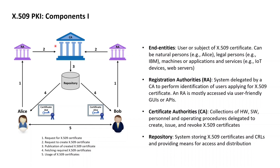Once the CA has created the certificate, the CA stores it into a public repository, which are systems to store X509 certificates together with certificate revocation lists, or CRLs. The repository must provide means for accessing and distributing the stored certificates and CRLs, and we will get to know the real purpose of CRLs once we talk about the validation of certificates in a later session.